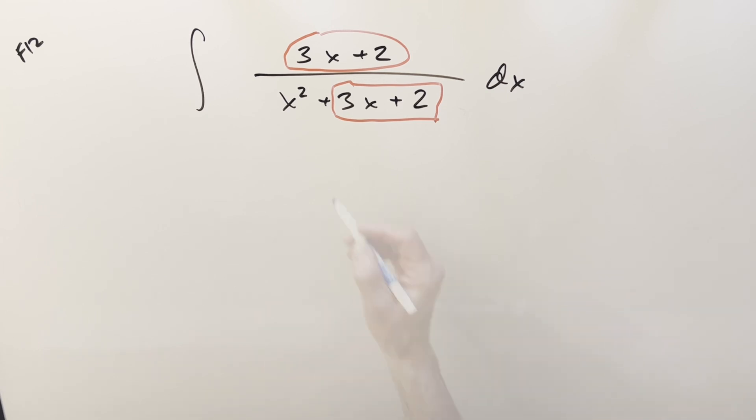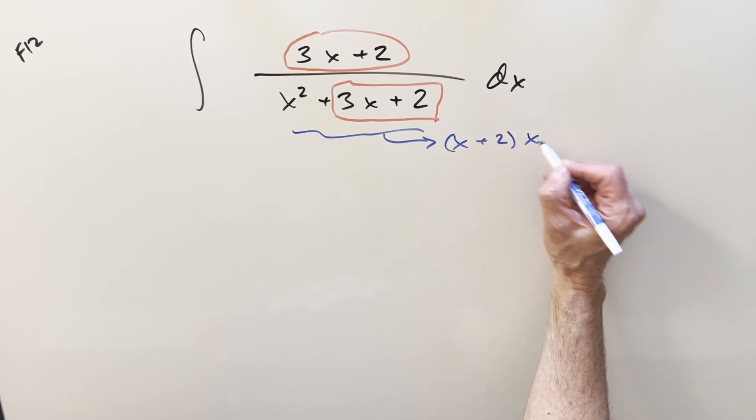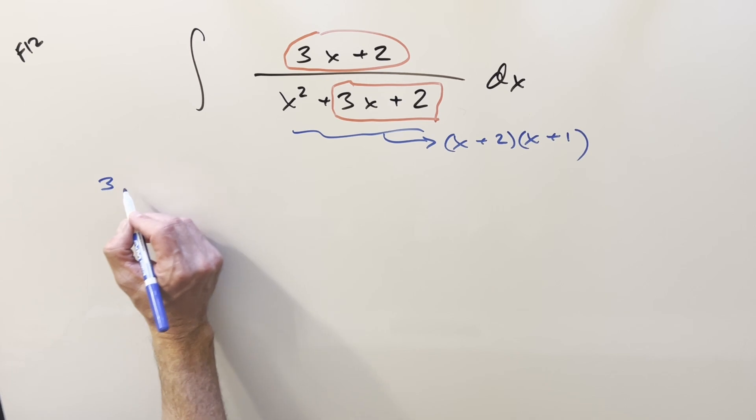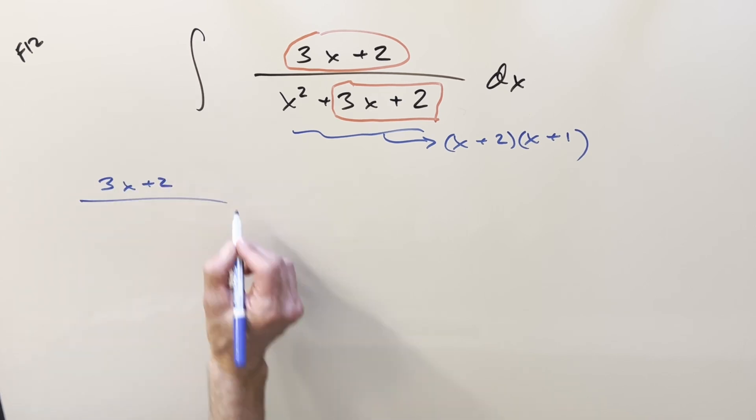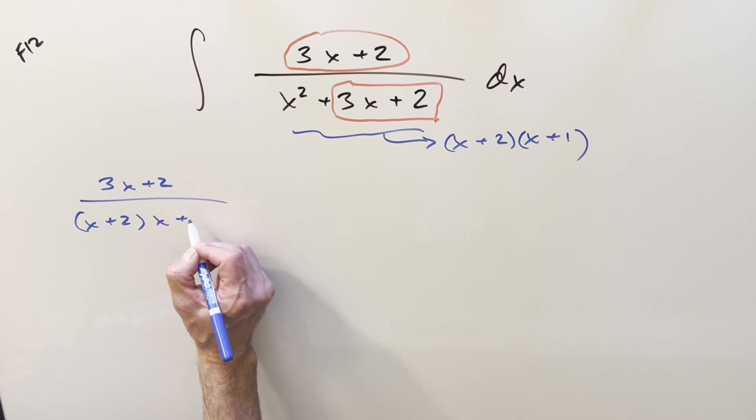So what I think I want to do to start is actually let's just factor this. This is going to easily factor as x plus 2 times x plus 1. And then from there, let's just do partial fractions on it using the cover-up method because we've got all linear factors here in the denominator, so it's going to be pretty easy.